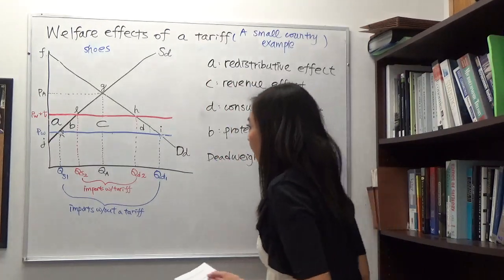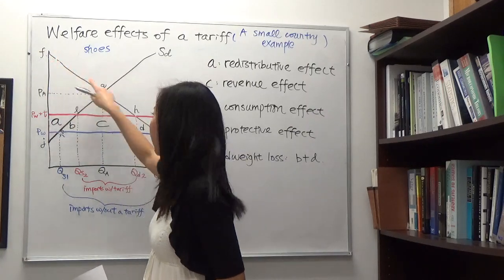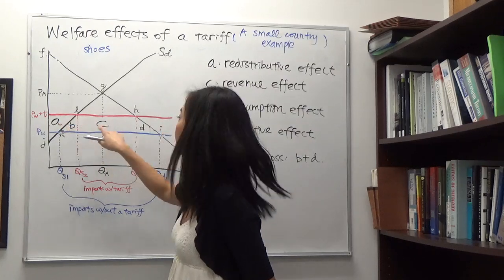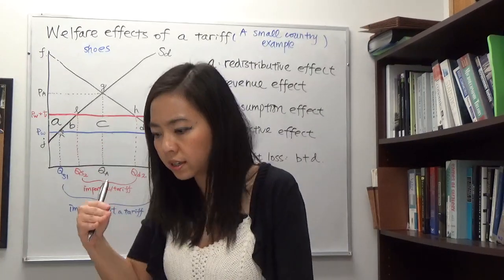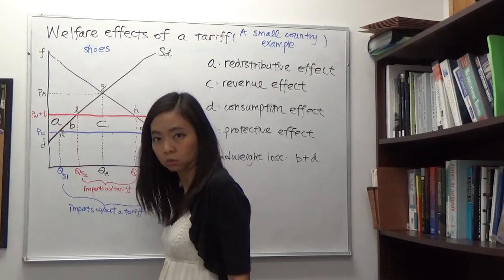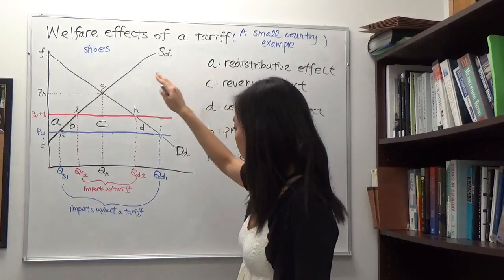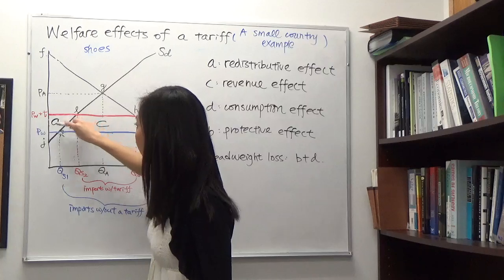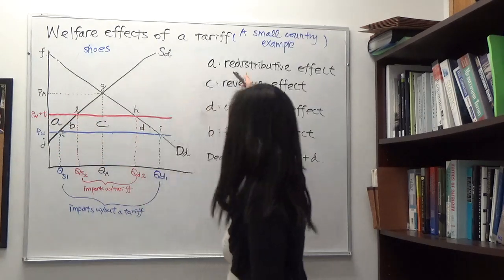The tariff causes consumer surplus to shrink from the large free-trade triangle to a smaller triangle. In particular, consumer surplus loses areas A, B, C, and D. It is like cutting a piece of pie from consumers, and we want to know where that pie goes. Area A actually goes to the producer — it is redistributed from consumer surplus to producer surplus. We call this the redistributive effect.